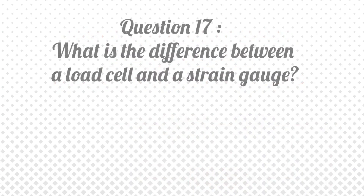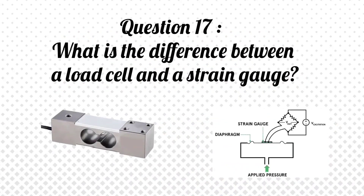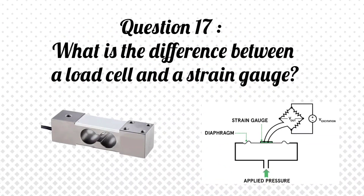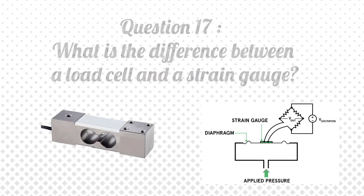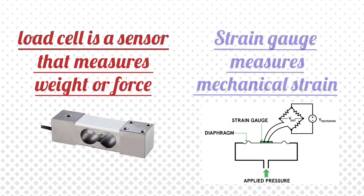Question 17: What is the difference between a load cell and a strain gauge? Answer: A load cell is a sensor that measures weight or force, whereas a strain gauge measures mechanical strain.